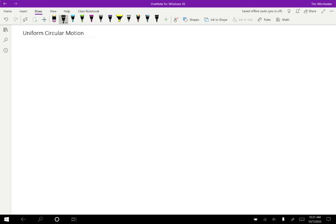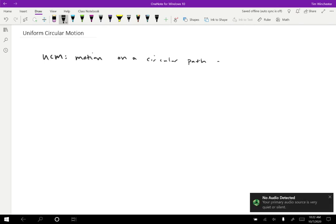Another particularly simple type of motion that allows us to explore some things that we couldn't do before is called uniform circular motion. So the definition of uniform circular motion is that we have motion on a circular path at constant speed.